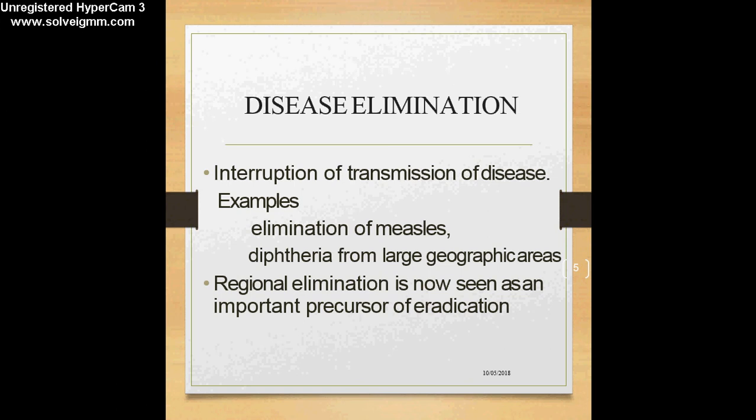Another example is diphtheria — a bacterial infection caused by Corynebacterium diphtheriae — which also affects young children. By giving the vaccine, we have been able to eliminate diphtheria from large geographic areas. The point to remember is that as we achieve more and more regional elimination, we are very close to eradication. Regional elimination is therefore a very important precursor to eradication.